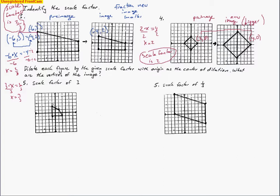We need to figure out what the new vertices are, so we'll write down the ordered pairs for the pre-image. One space to the left, two spaces up — that's the first point. Next point is one space to the right, one space up. The other point is two spaces to the right, one space down. And the last one is one space to the left, one space down.